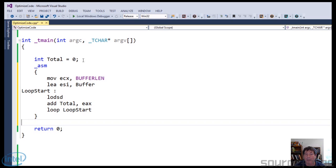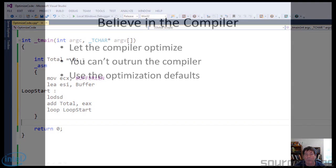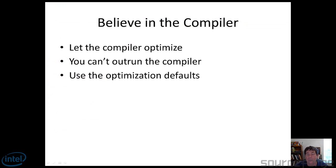The last point is that you should let Visual Studio, Visual C++, or the Intel compiler use their optimization defaults. I actually did quite a bit of experimentation with size optimization versus speed optimization. As it turns out, the way the L1 and L2 cache work, many times size optimizations give you better speed than speed optimizations.